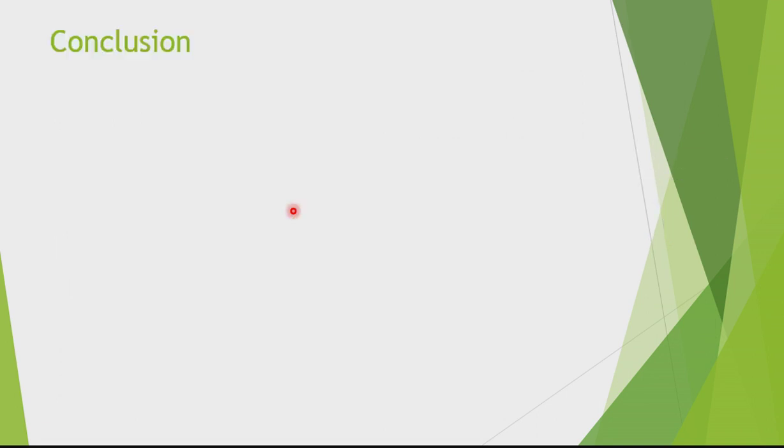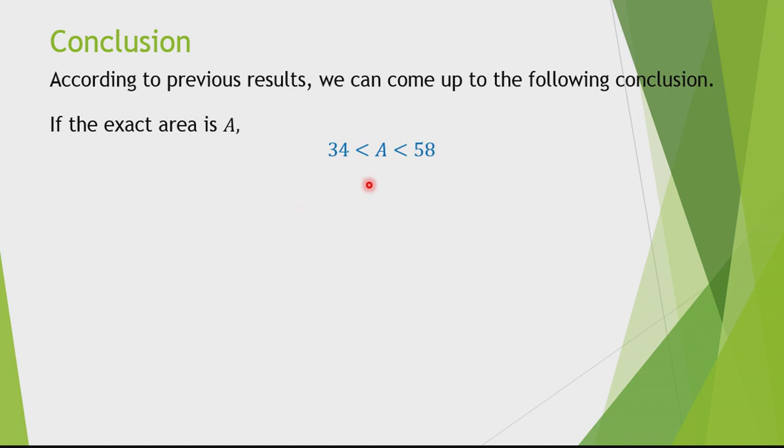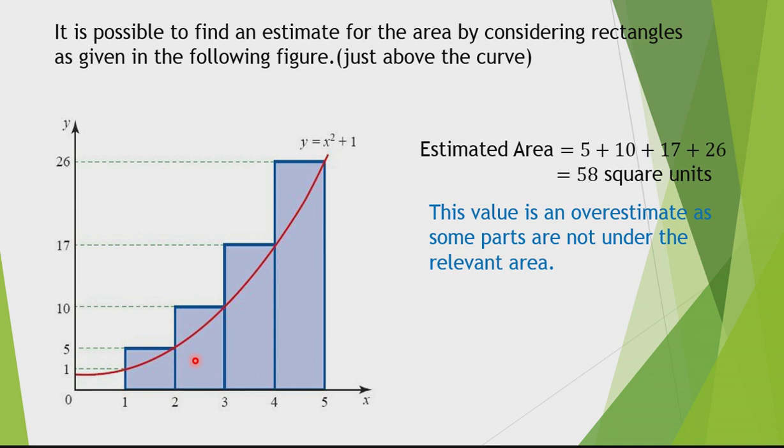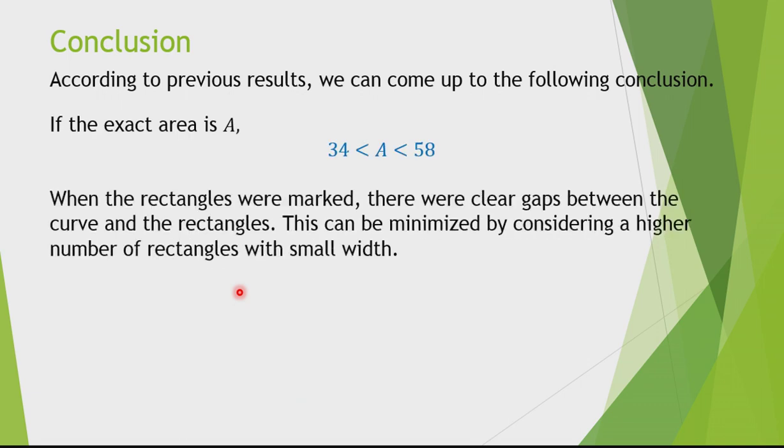This is a value which is more than the exact area as some additional parts are added to my exact area. So what is the conclusion? My exact area, capital A, should be in between the underestimated area 34 as well as the overestimated area 58. If I go back for a minute, you can see that my rectangles are somewhat bigger. So what can I do? I can take rectangles with small widths. I can consider very small size rectangles and try to construct as many rectangles as possible on my sketch below the curve as well as above the curve.